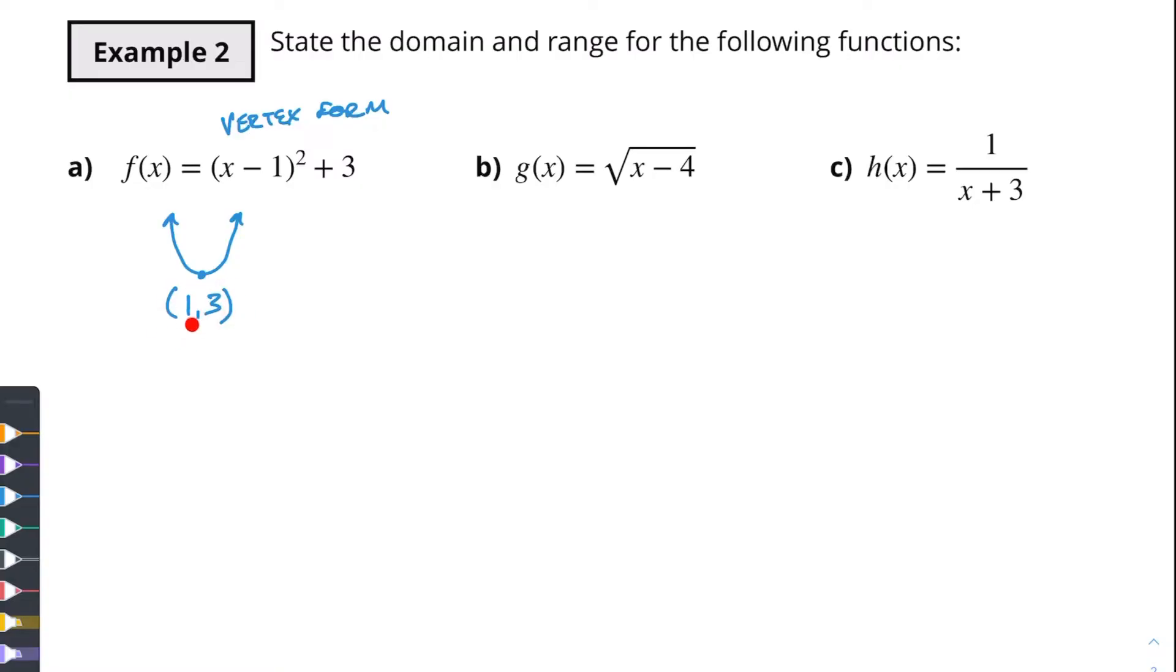So we've got our vertex being at 1, 3 so that means our x values are going to be everything that goes out in either direction right, it's never going to stop our x values. So we know that x is an element of all real numbers or you could just say x is all real numbers, our domain is all real numbers. The y value, since it's starting at 3, 3 is our lowest value. It's going to be everything bigger than that so y is going to be greater than or equal to 3.